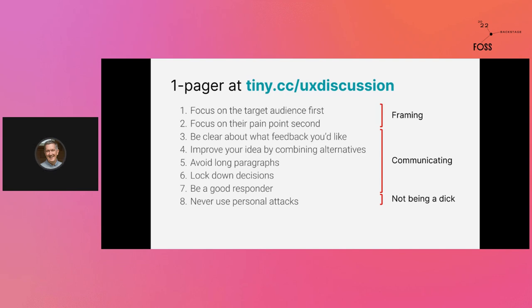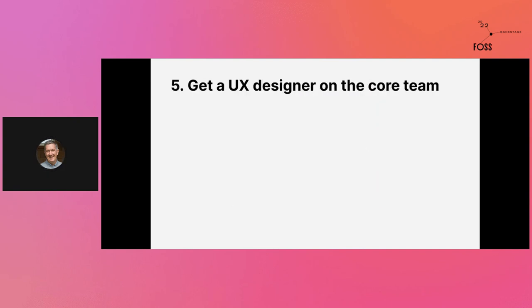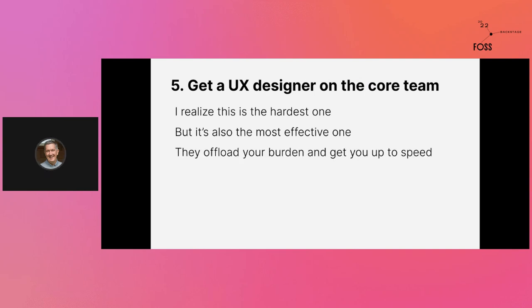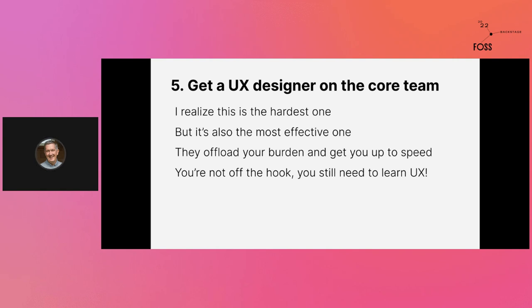These first two points in the discussion guide are about framing — make sure you have a frame of reference whenever you discuss something. The next ones are about how to communicate better — techniques that work not just for UX, but for anything in your project. My last point is the obvious one but the best one: just get a UX designer on the core team. This is clearly the hardest one to do, but it's the most effective because it allows you as a maintainer to offload some of your burden. Having a UX designer on the core team, like elementary OS does, gives a certain cachet to UX — it makes UX designers feel welcome and there's someone that speaks their language. You're still the CEO and they're the CFO — you still need to talk, learn UX, and support them, otherwise they'll leave, but it's a good start.